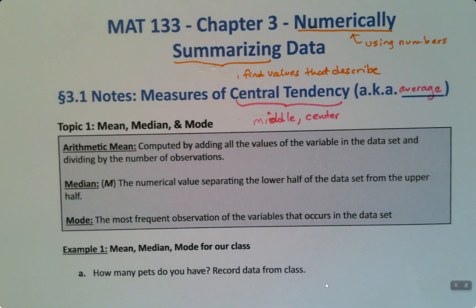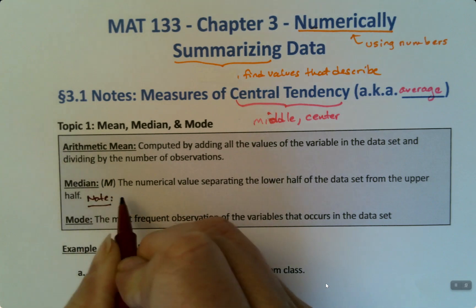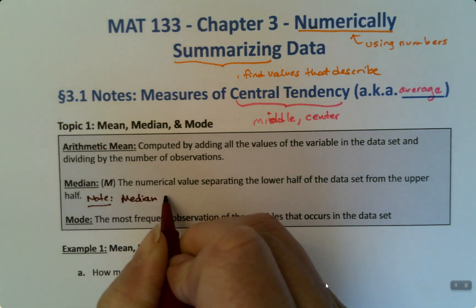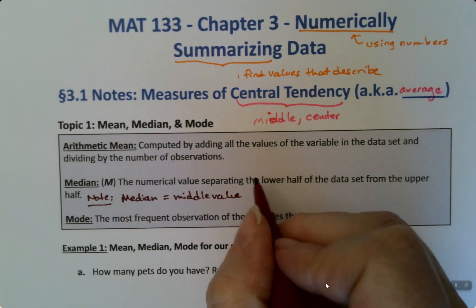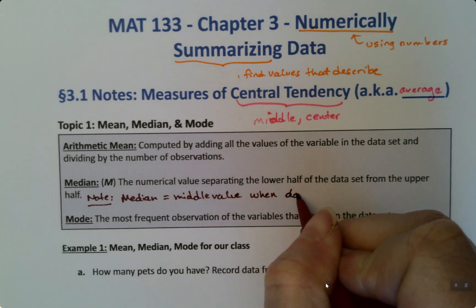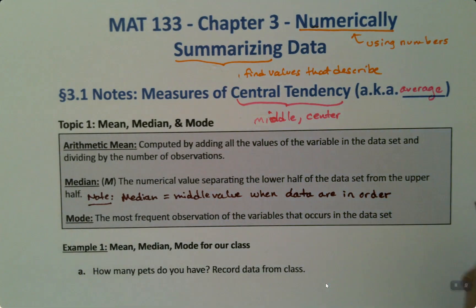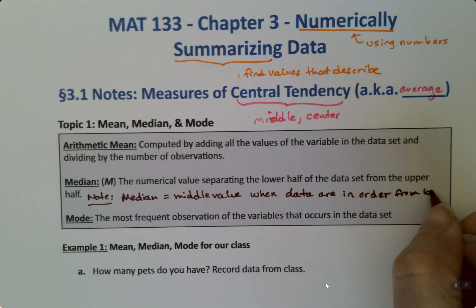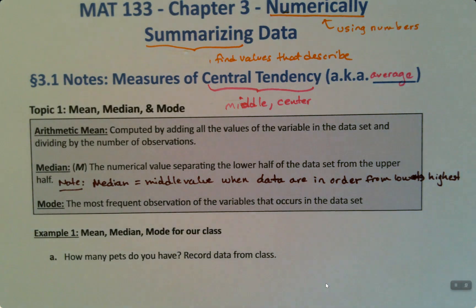Then there's the median, which you've probably seen in another class. You've probably seen all three of these, to be honest with you, in some class somewhere in your life. So the median is the numerical value that separates the lower half from the upper half. So it's the middle value when you put your data set in order, when the data are in order. From lowest to highest.